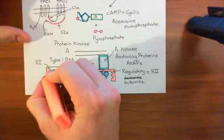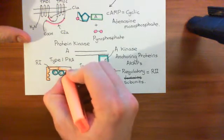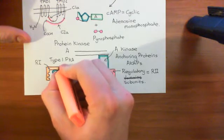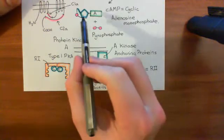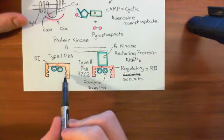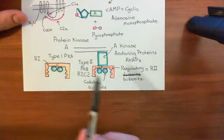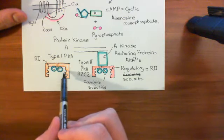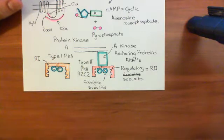When cyclic AMP goes up, it will activate both forms of protein kinase A. Four cyclic AMP molecules will bind in the cyclic AMP binding sites of a protein kinase A molecule — this applies to both type 1 and type 2. So you get cyclic AMP binding at all four sites, likewise for the type 2 protein kinase A.